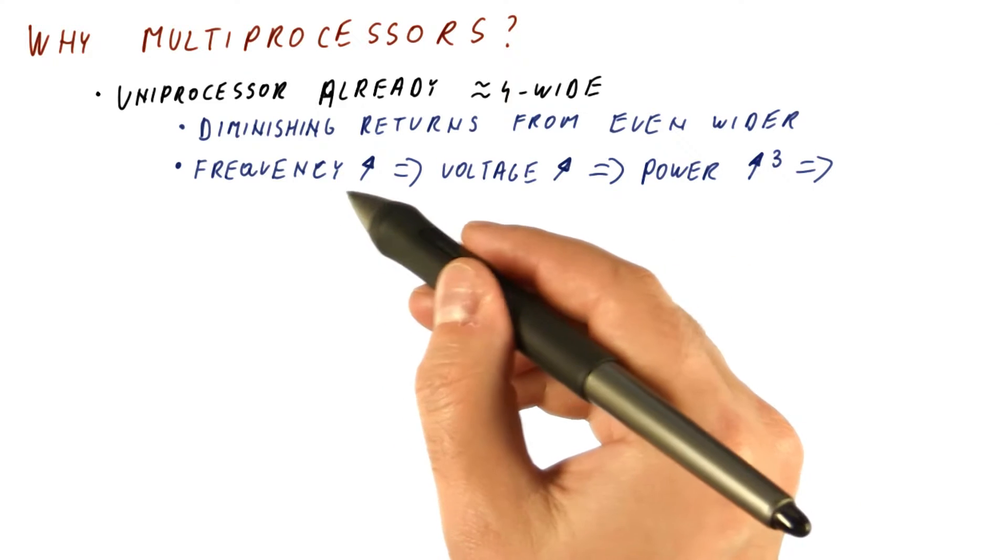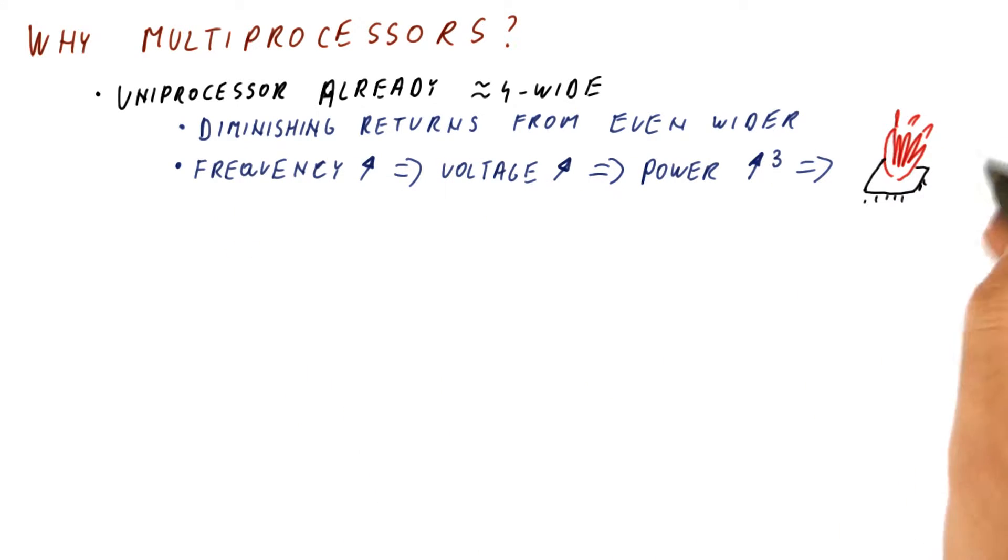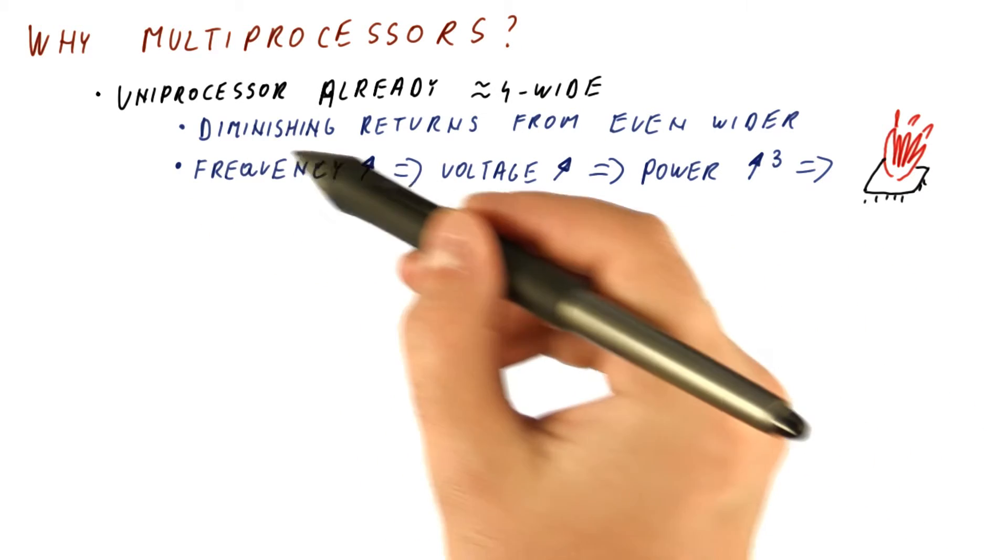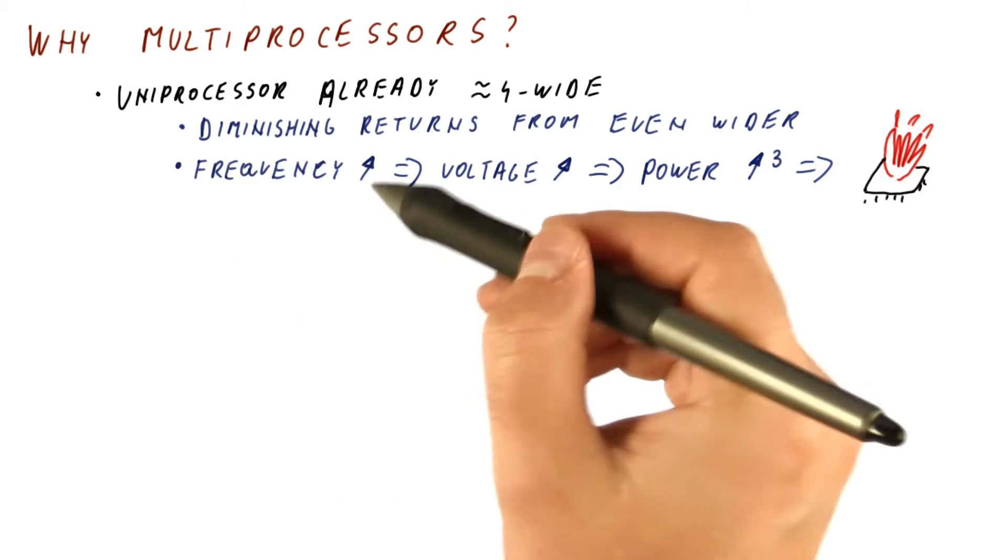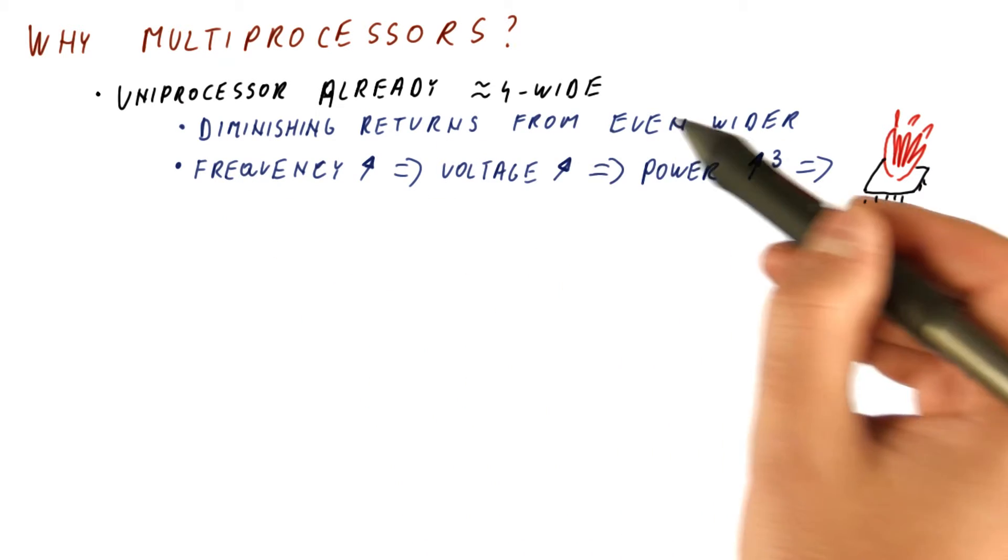So even if we increase the frequency by not too much, we would end up burning our processor. So we don't really want to make our uniprocessors be clocked twice as fast as before, and we don't want to make them much wider than they already are.